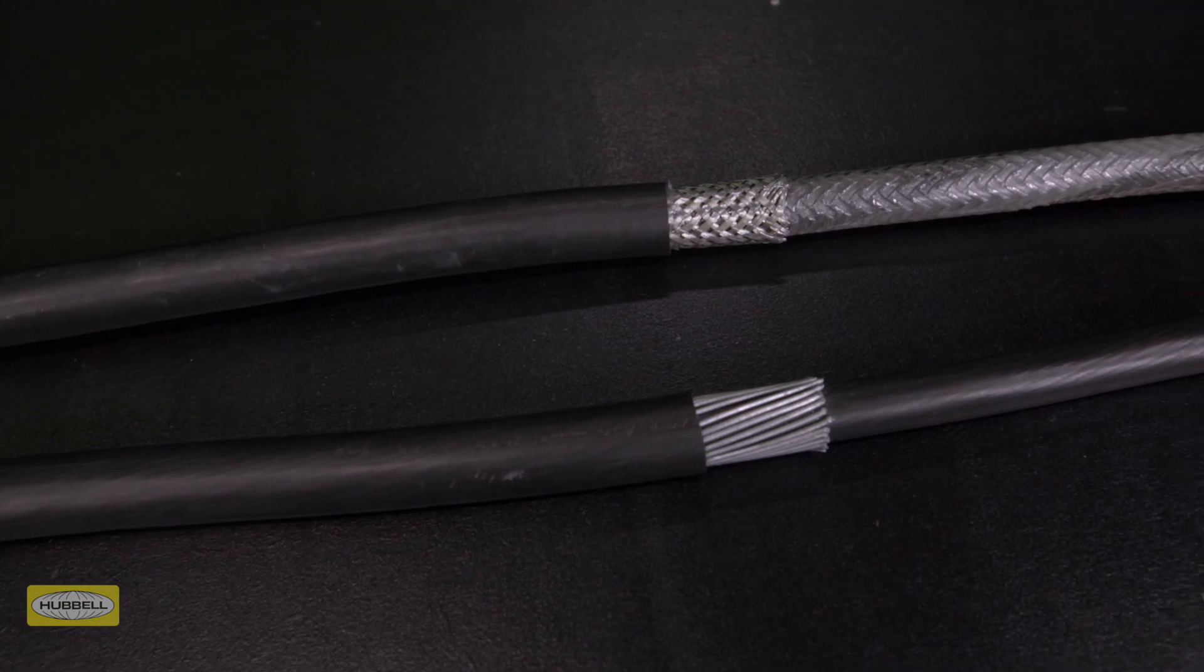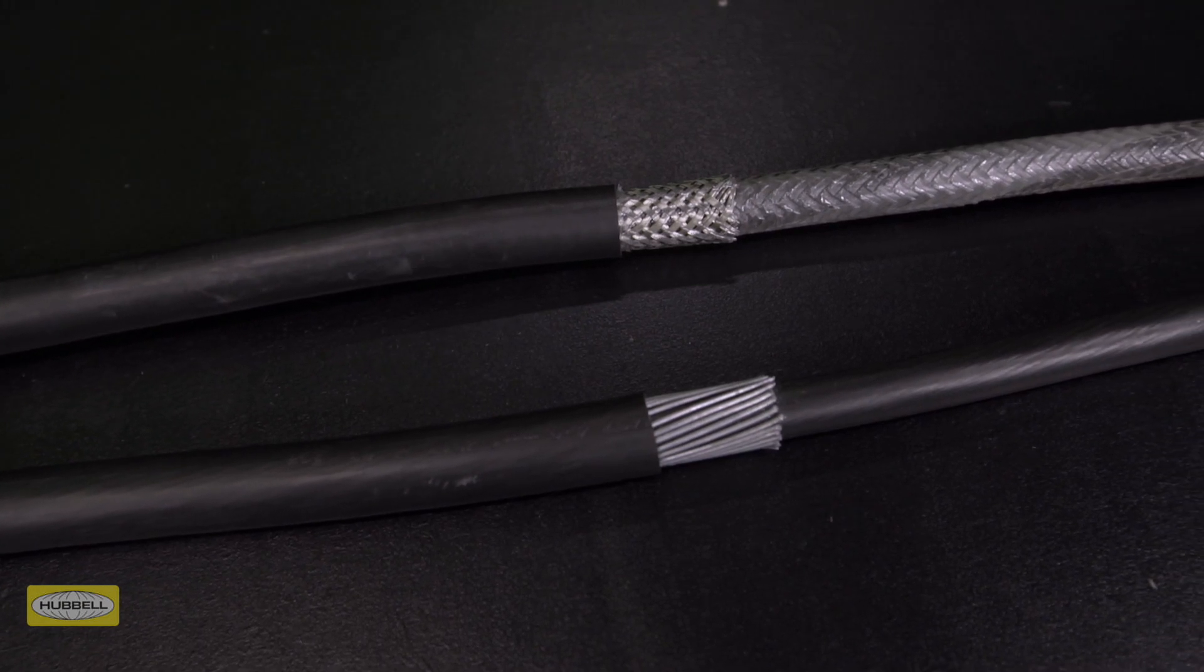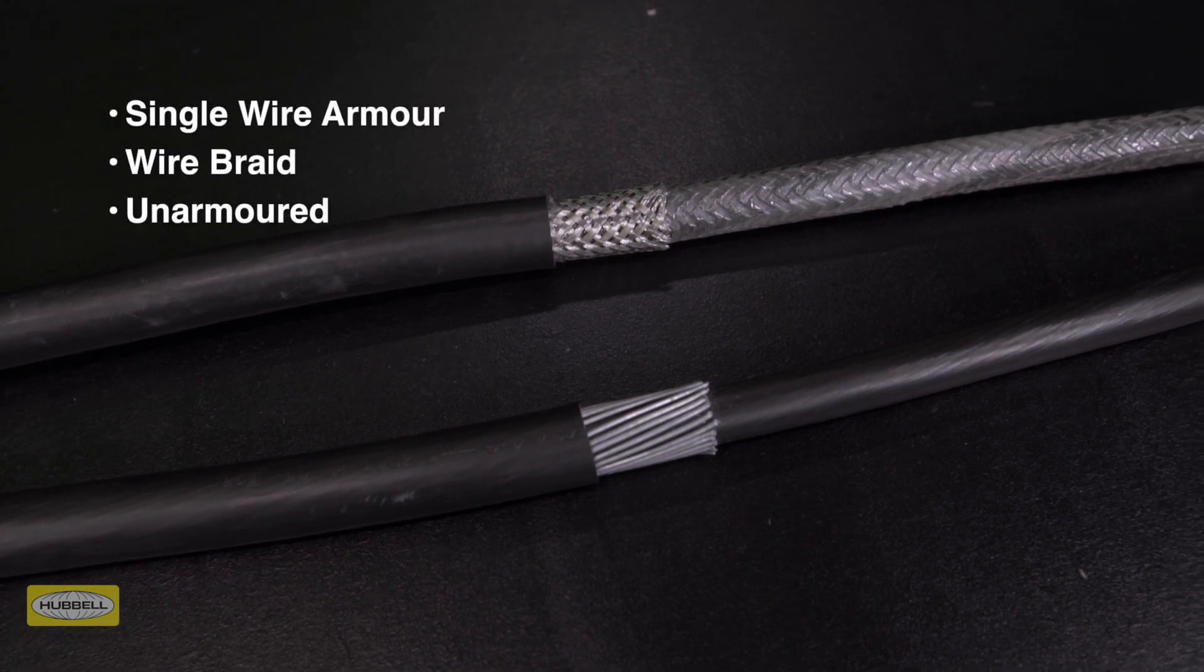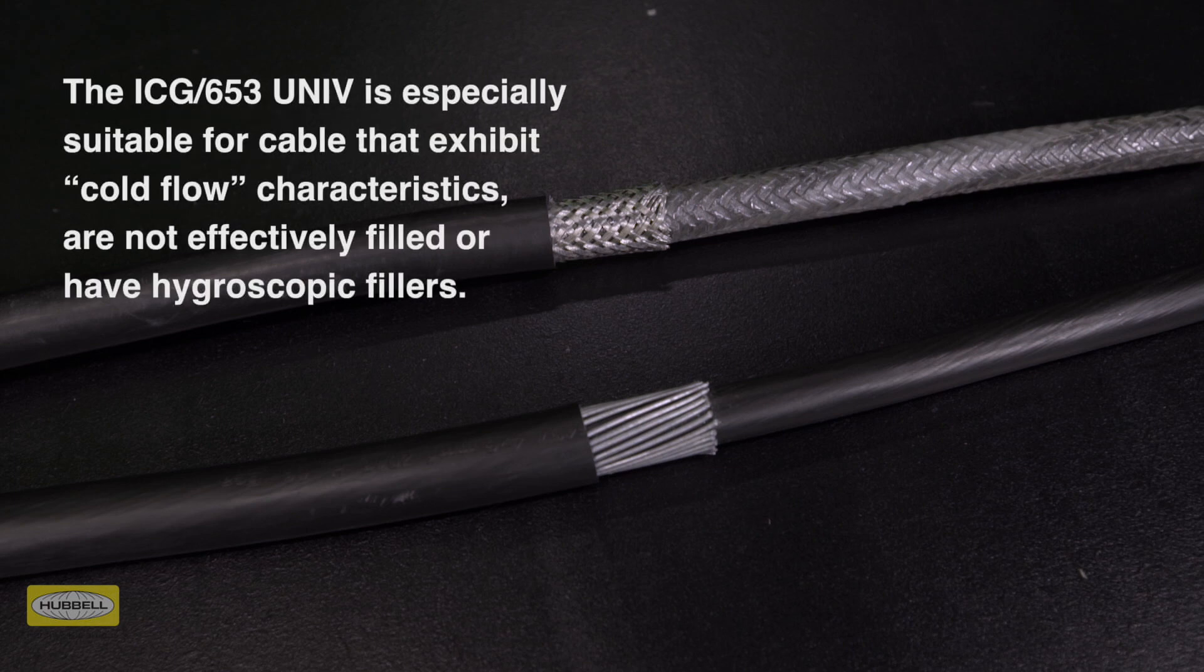This dual certified cable gland is designed for use with all types of elastomer and plastic insulated cables, including armored, braided, and unarmored cable types. The ICG653 universal is especially suitable for cables that exhibit cold flow characteristics and are not effectively filled or have hygroscopic fillers.